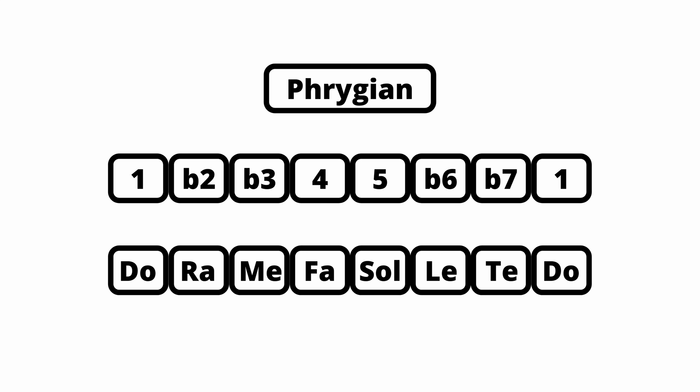In solfège, we would sing the Phrygian mode like this: Do, ra, me, fa, sol, le, te, do, te, le, sol, fa, me, ra, do.